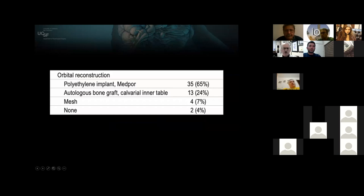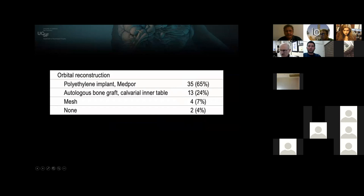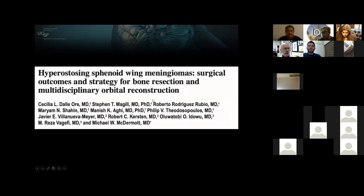Looking at the results for orbital reconstruction, the majority of the time we used this polyethylene Medpor implant. About 25% of the time we used autologous bone, and rarely did we not reconstruct the orbit — though Bill Caldwell from Utah will routinely not reconstruct the orbit. My preference was to do so. This publication is now in the journal Neurosurgery on this series of patients.